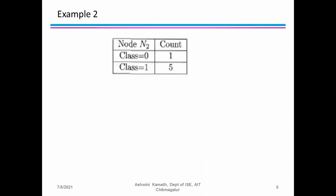Let's discuss Example 2: Node N2, where class 0 has count 1 and class 1 has count 5. Total: 1 + 5 = 6. The Gini index = 1 − (1/6)² − (5/6)², which equals 0.278.